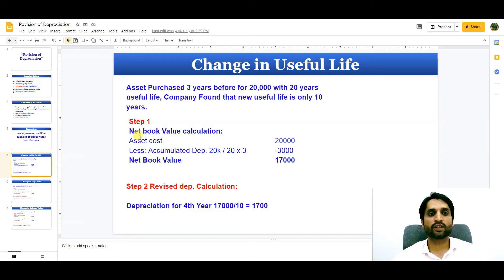So step one, we need to calculate first the net book value. As you can see here, asset cost less accumulated depreciation, depreciation of previous three years. It was 3,000, 20,000 divided by 20 multiplied by 3, so 3,000. It is straight line depreciation method. So the net book value remaining for 17 years which are remaining will be 17,000. So step two, revised depreciation calculation because now the useful life of the asset is only 10 years. So this 17,000 we need to divide it by 10. So yearly depreciation for fourth year will be 1,700.